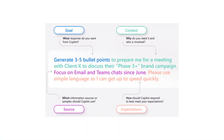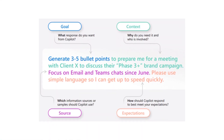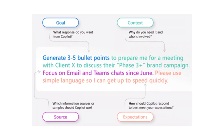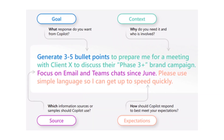Here's another visual on Copilot Lab that shows an example of a great prompt broken down into the four steps of building a strong one. This prompt is similar to the one we just went through: generate three to five bullet points to prepare me for a meeting with client X to discuss their phase three brand campaign. Focus on email and Teams chats since June. Please use simple language so I can get up to speed quickly. You want to always make sure your prompt is clear and stay away from being vague.